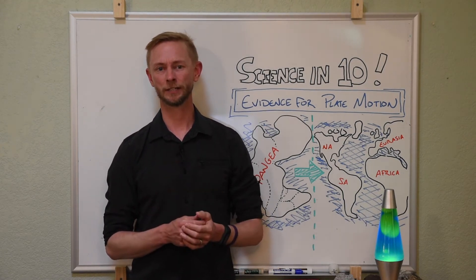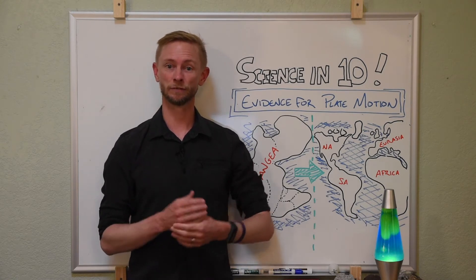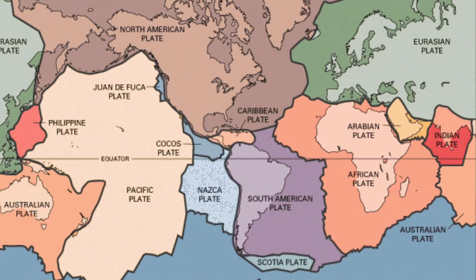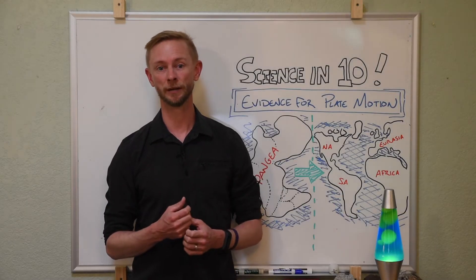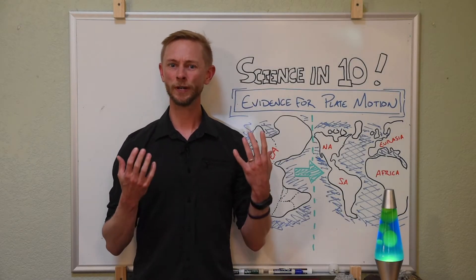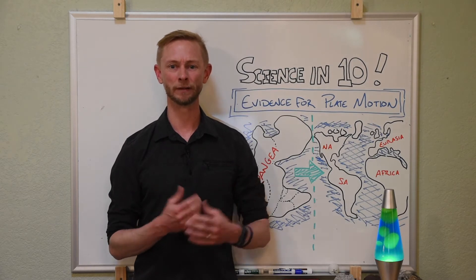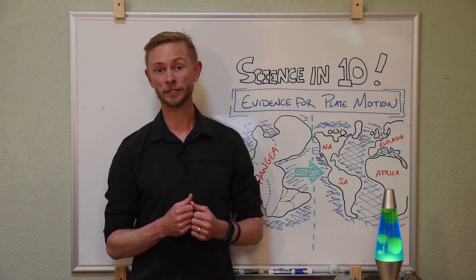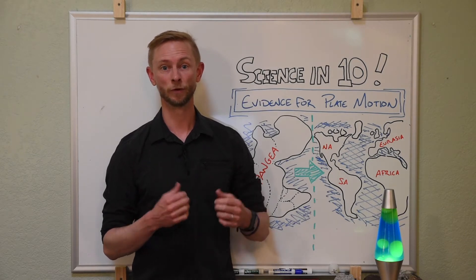The central tenet behind plate tectonics is that the Earth's lithosphere is broken up into numerous rigid plates that change their configuration over geologic time. But how do we know the plates are actually moving? Let's take a look at a couple pieces of geologic evidence that show the tectonic plates and the continents move around.